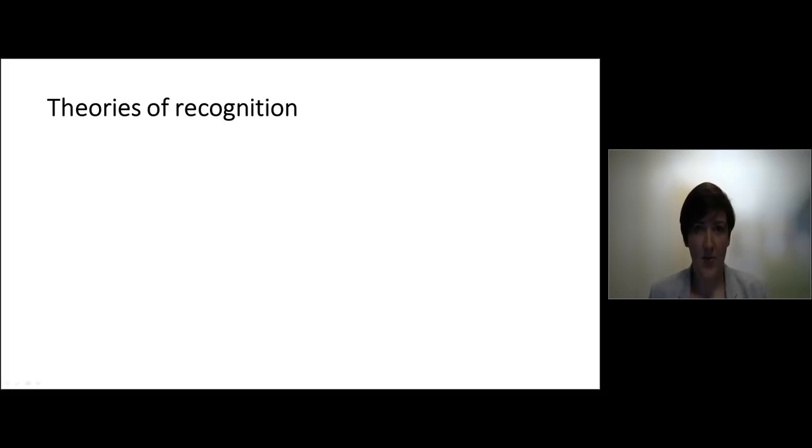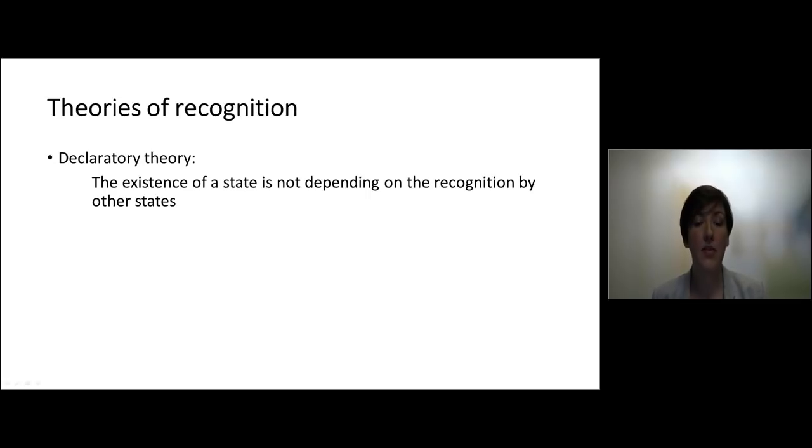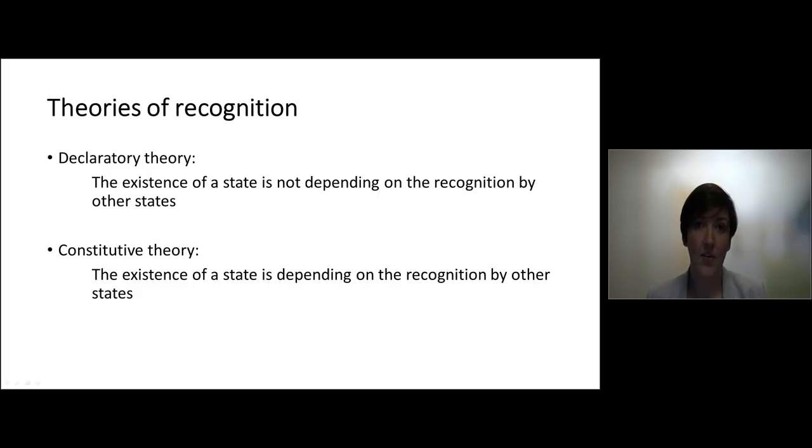Next, we come to the theories of recognition. So why are these theories important? Well, we just saw that there are four criteria for statehood. And the first theory says that if you meet these four criteria, then you are a state, regardless of what other states are thinking. So it is not necessary to be actually recognized by other states as being a state to be a state. The other theory is saying the exact opposite. So the other theory is saying it's nice that you meet those criteria, but you still need to be recognized by other states to be a state. And this recognition is usually a very political act. And that's why they call this theory, which is the dominant theory, a very subjective theory. So you only exist as a state when others recognize you as such.